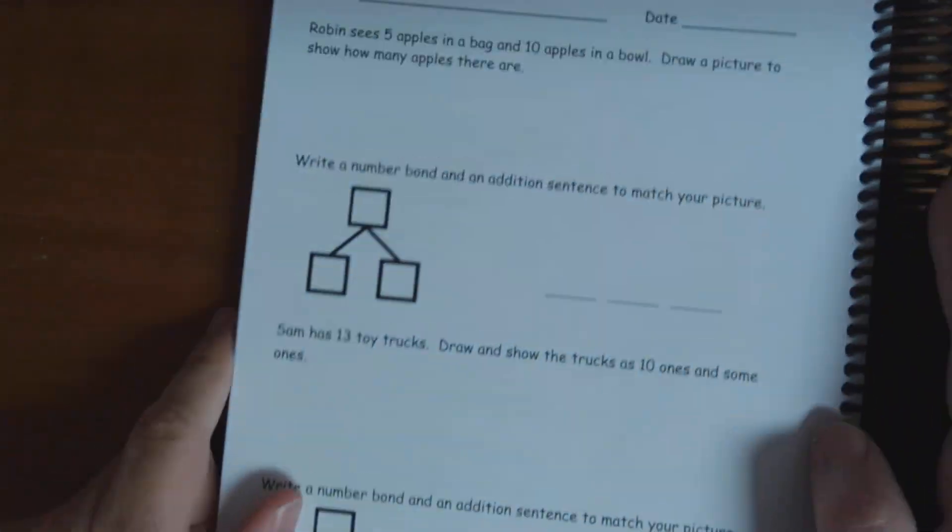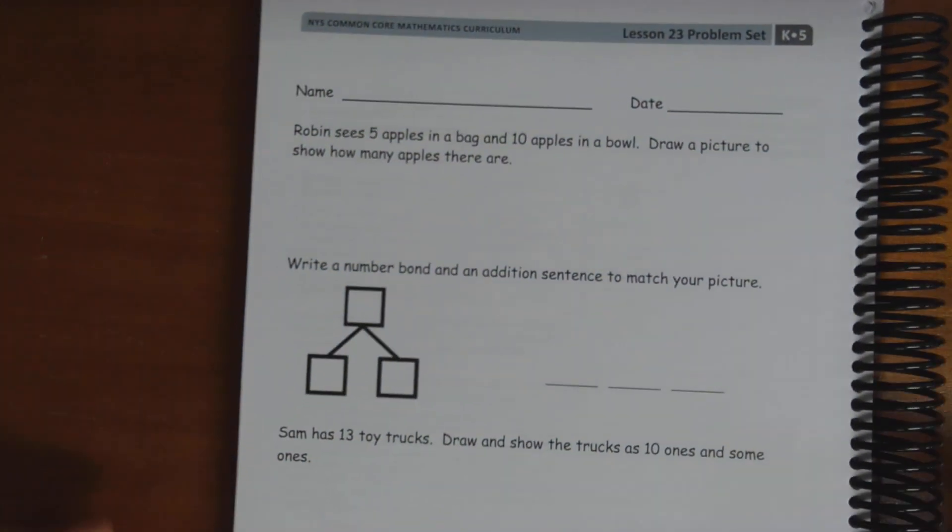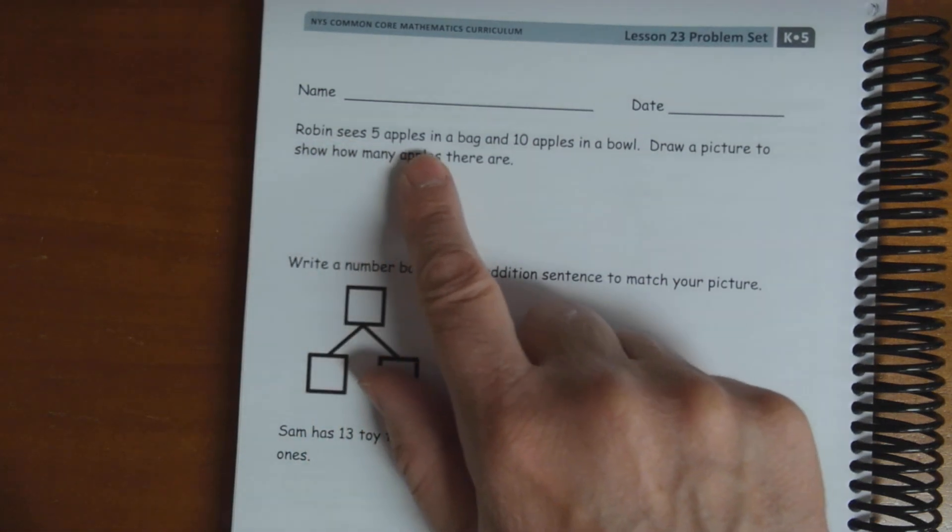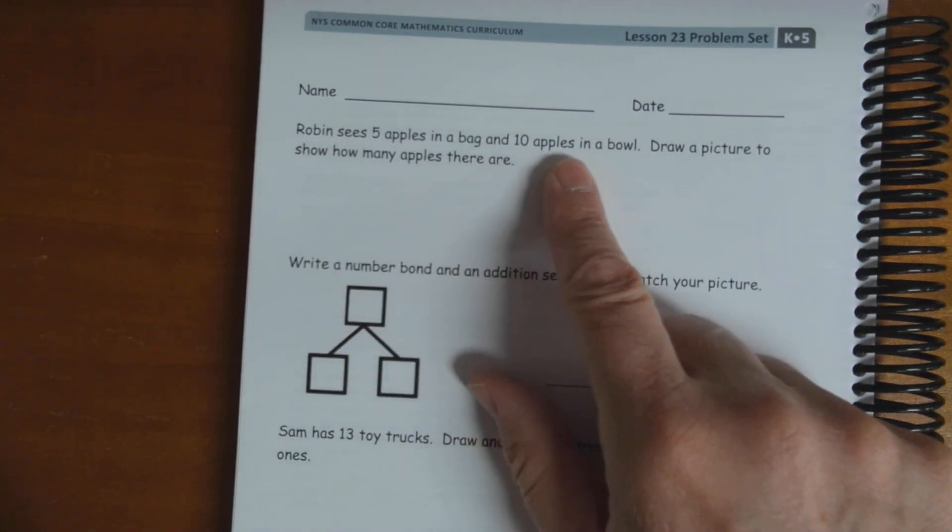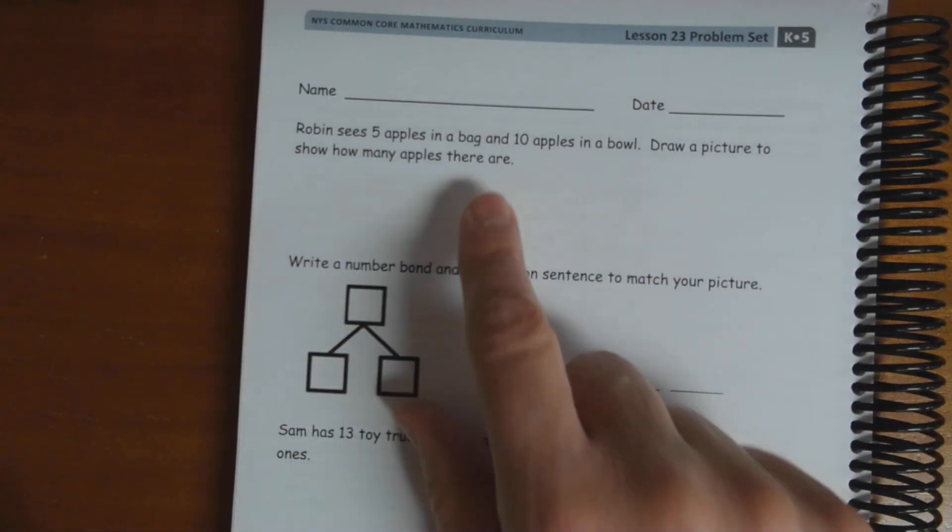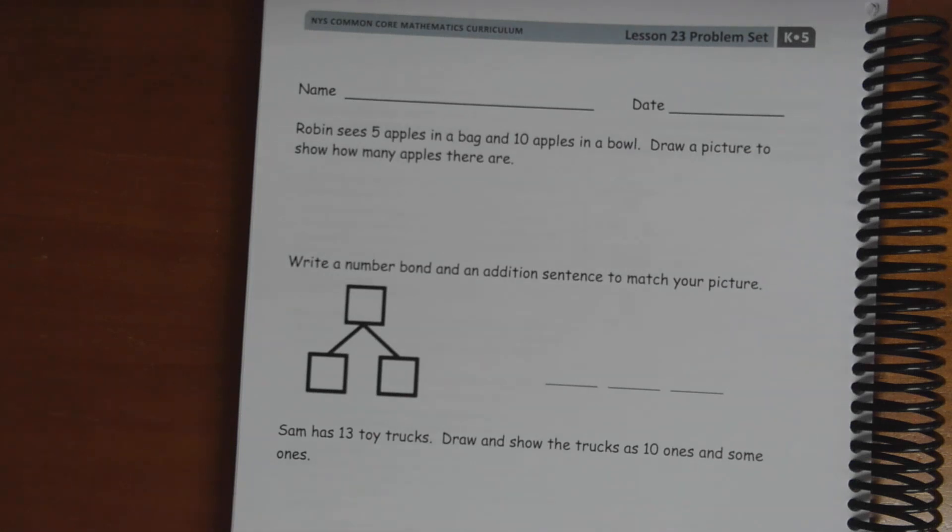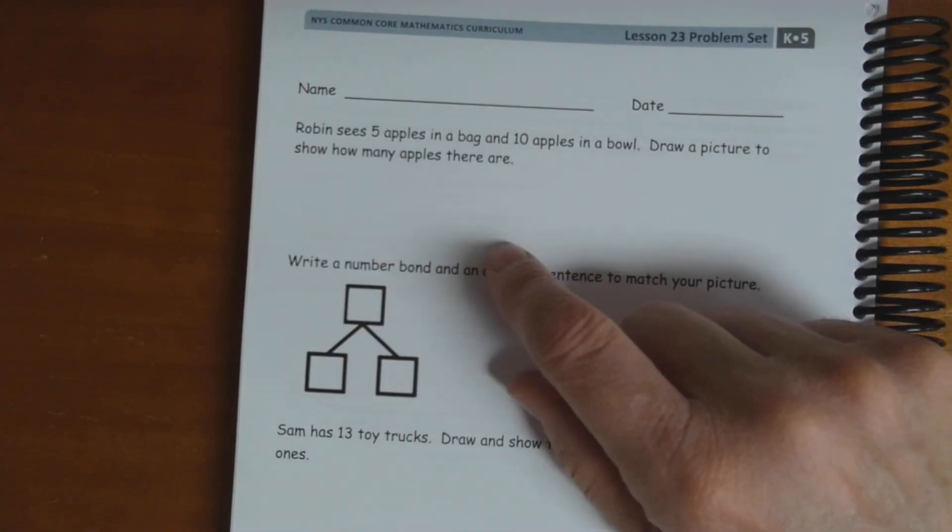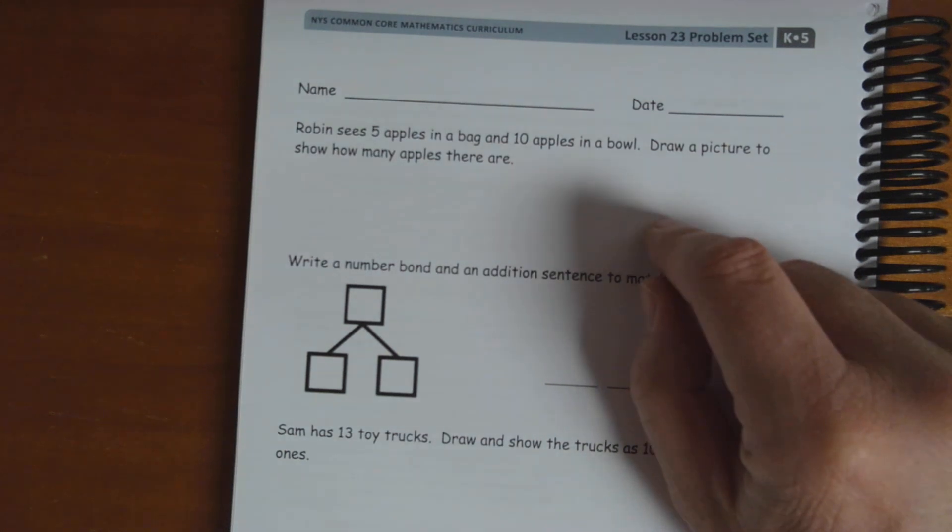Let's jump up and look at that. They're going to give you three stories here. This first one says, Robin sees five apples in a bag and 10 apples in a bowl. Draw a picture to show how many apples there are. So, you're going to have to draw a bowl that has 10 apples in it and a bag that has five apples in it.